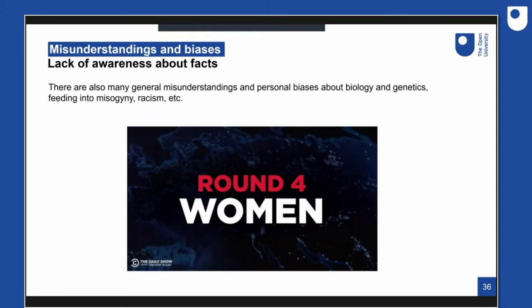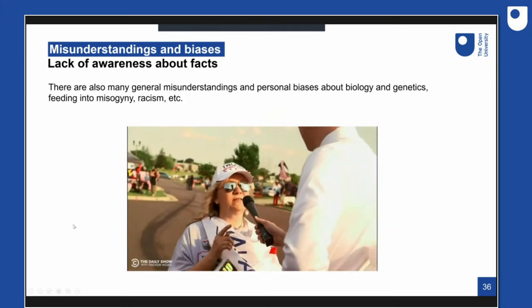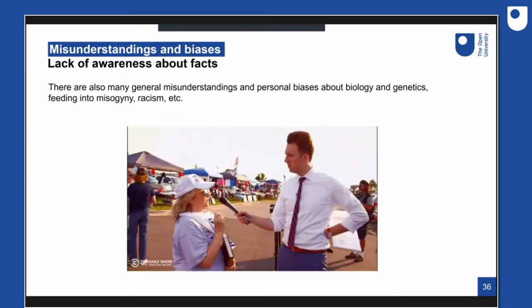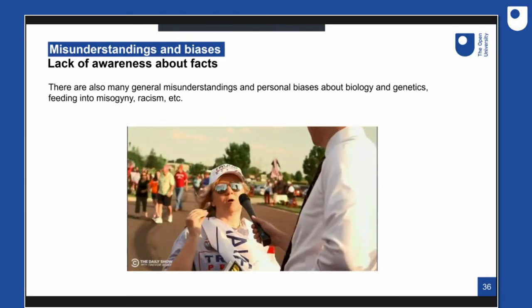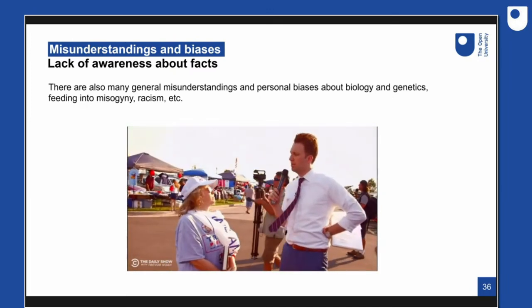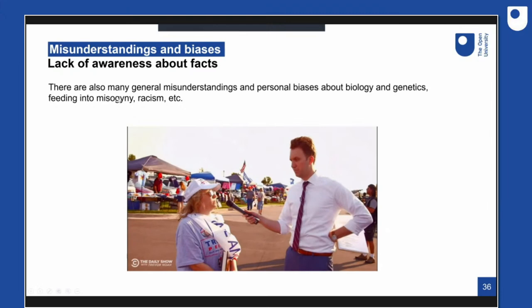Misunderstandings and personal biases about biology and genetics feed into many harmful characteristics like misogyny and racism. A video clip shows someone claiming women can't be president because 'a female has more hormones — she could start a war in 10 seconds.' The response: 'Haven't all wars been started by men?' This person is presenting a prejudice against their own group — a strongly held personal bias overriding reasoning.